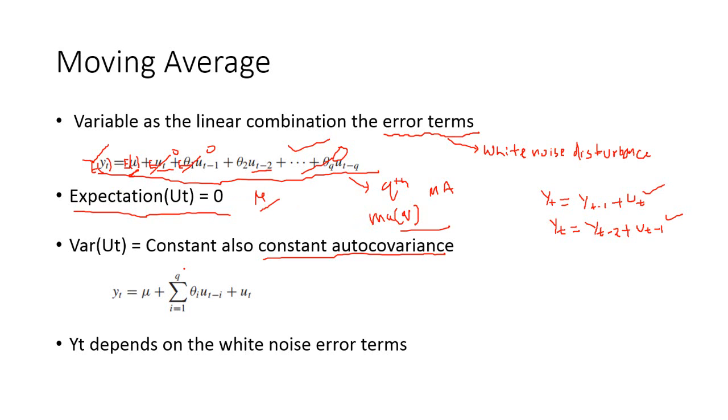Another property of time series process is that the variance of yt is also a constant. So variance of yt is also constant. We can prove it also.